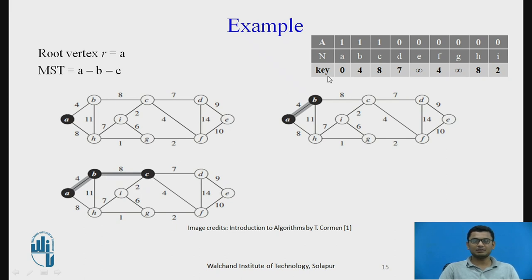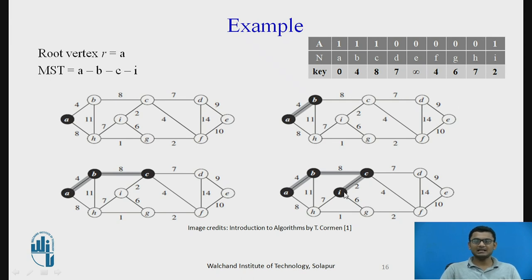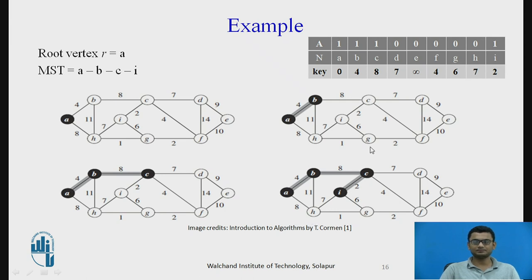After selecting C, the key values of its adjacent nodes I and D are updated. The minimum key value available is 2, so node I is added to the MST. The adjacent unvisited vertices of I then have their key values updated: G is updated to 6 and H is updated to 7.